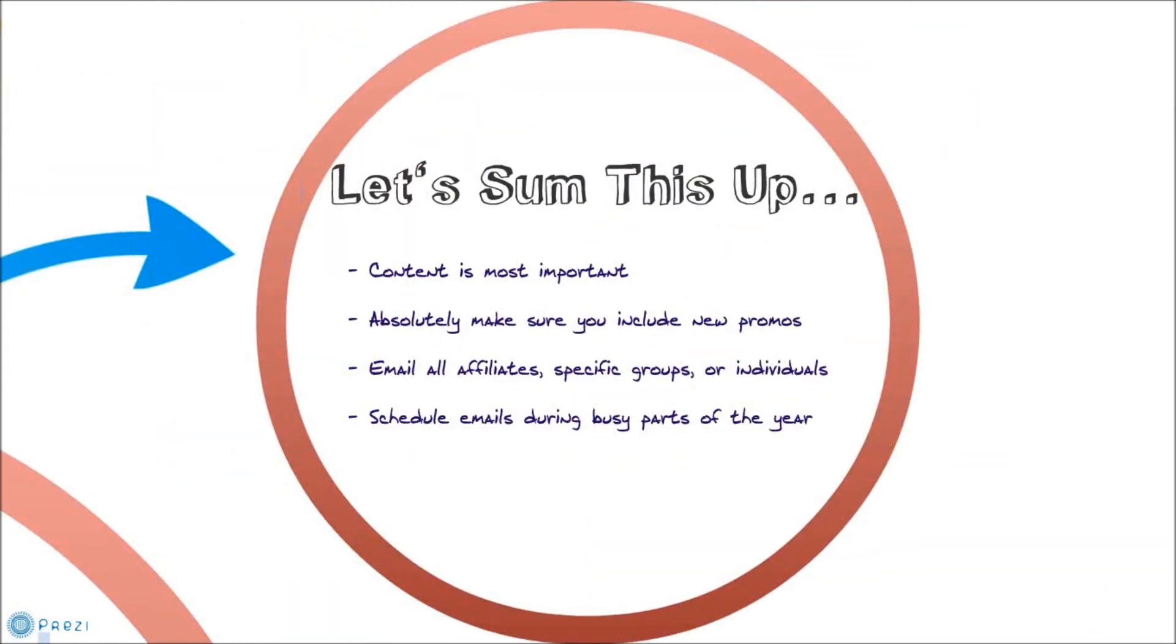So let's go over a quick conclusion. Content is by far the most important thing. Absolutely make sure you have new promos in your emails and include your promo tags and your email tags. You can email all affiliates, specific groups, or individuals based on the content of your email. And finally, schedule your emails out during the busy part of the year.